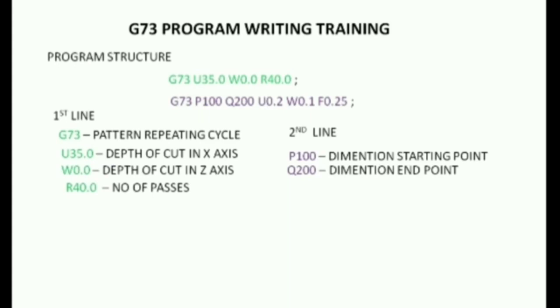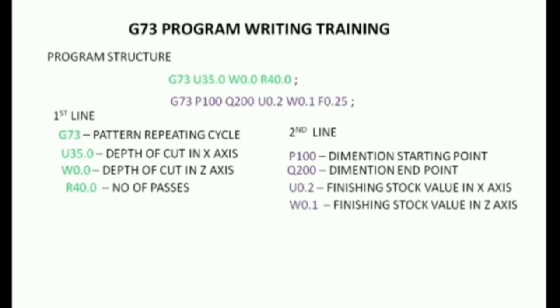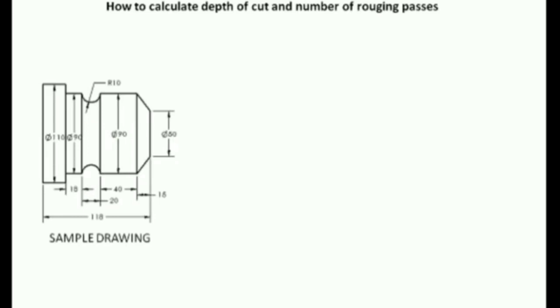Q200 is the profile ending point. In the second line, U0.2 is the finishing stock. We will check the stock. W0.1 is the length of the stock. As our index parameter, the depth of cut — how is the number of passes calculated?